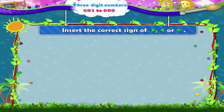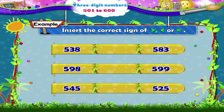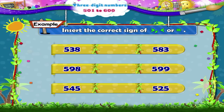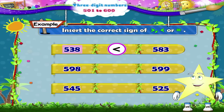Let us solve some examples now. Here are some pairs of numbers. We have to insert the correct sign of greater than, smaller than or equal to. The first pair of numbers is 538 and 583. Here Starry, compare the tens place digit. So, the number 538 is smaller than 583.